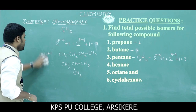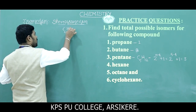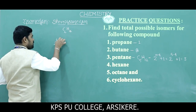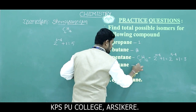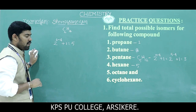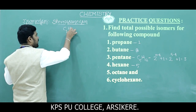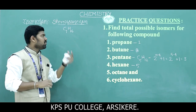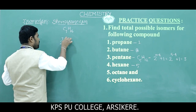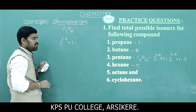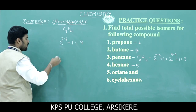For hexane with 6 carbon atoms: 2^(6−4)+1 = 2^2+1 = 4+1 = 5 possible isomers. For heptane, C7H16: 2^(7−4)+1 = 2^3+1 = 8+1 = 9 possible isomers. For octane, C8H18: the formula 2^(n−4)+1 is valid up to 7 carbon atoms only.